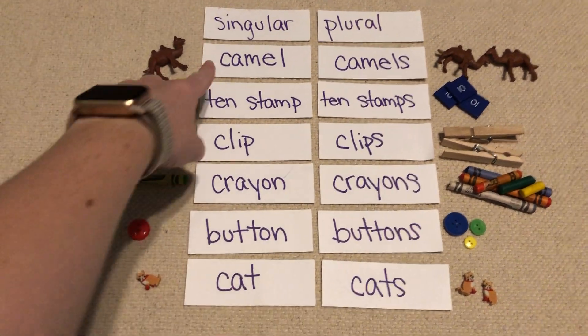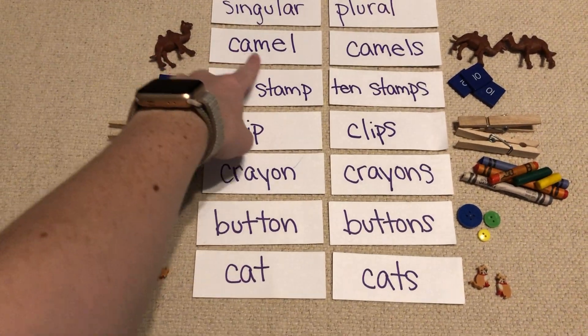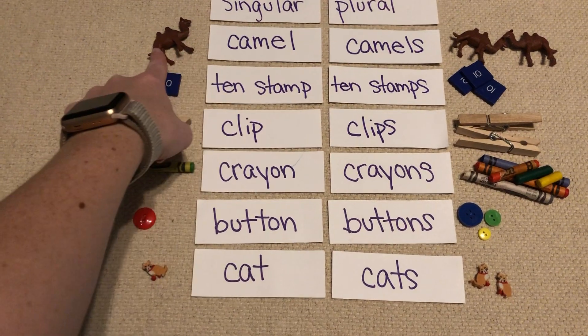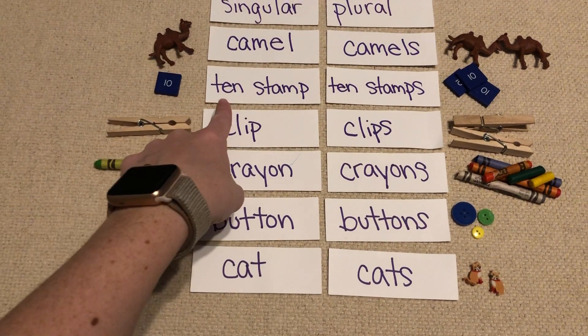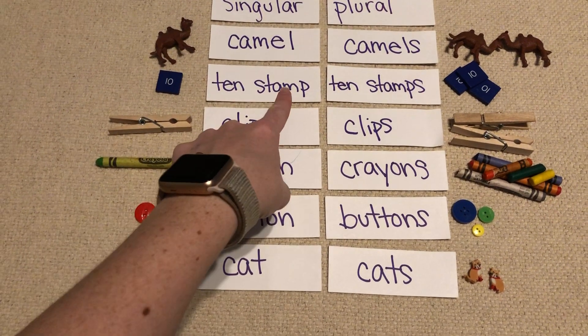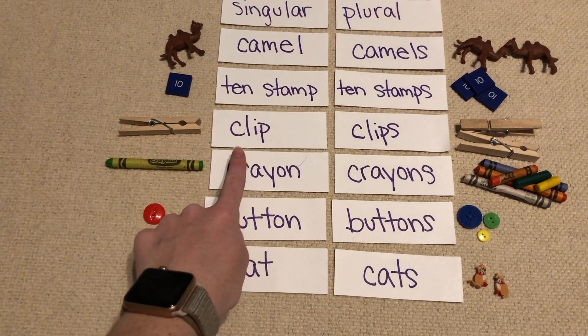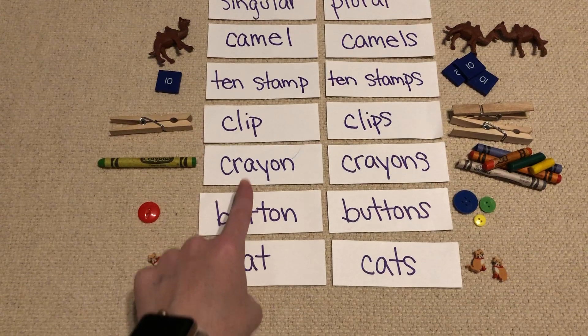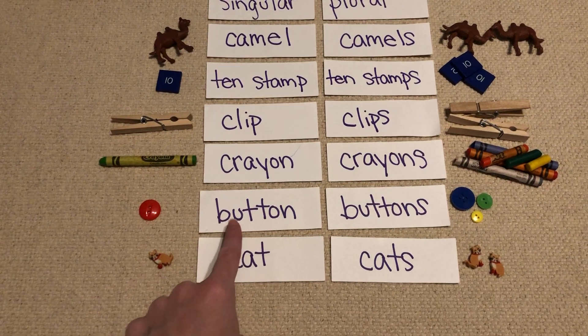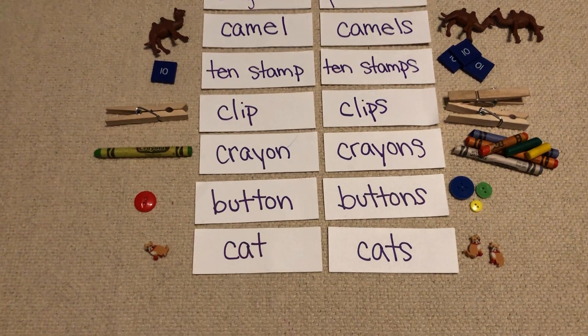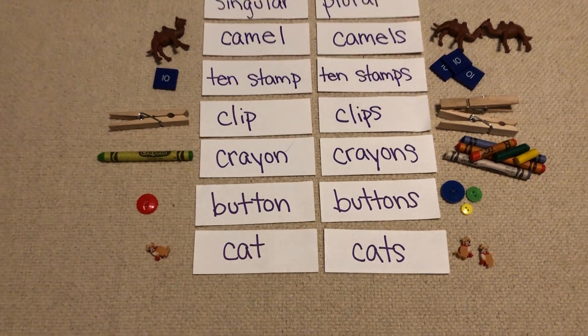I have a camel, a ten stamp, a clip, a crayon, a button, and a cat.